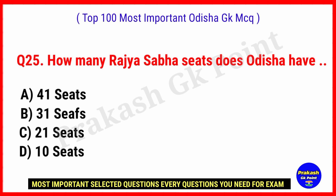Next question: How many Rajya Sabha seats does Odisha have? Answer: Option D, 10 seats.